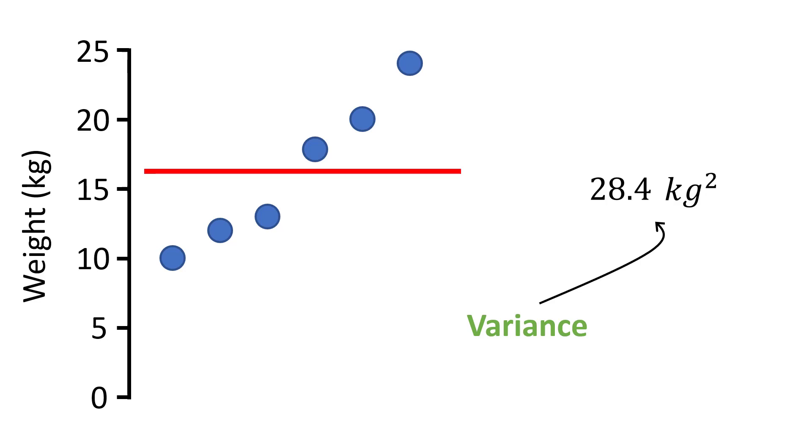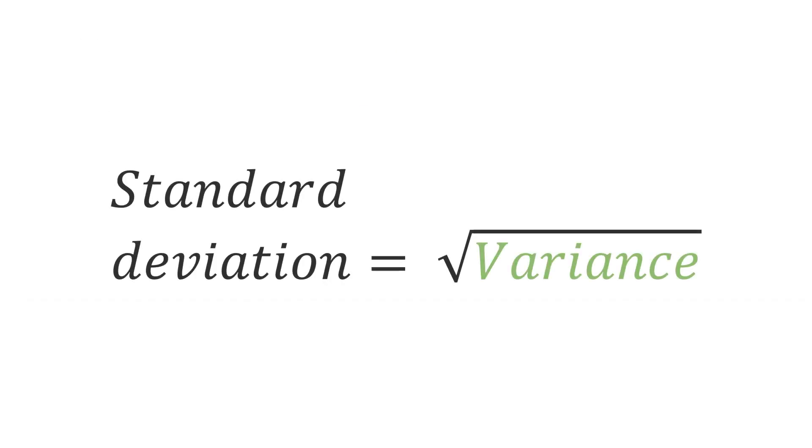Now usually researchers often use the standard deviation rather than the variance to describe the spread of the data. The standard deviation is simply calculated by taking the square root of the variance. So if we take our example we can work out the standard deviation by square rooting 28.4.